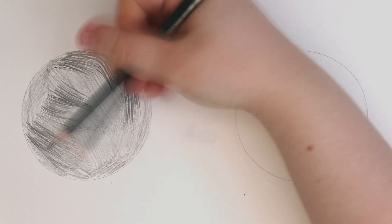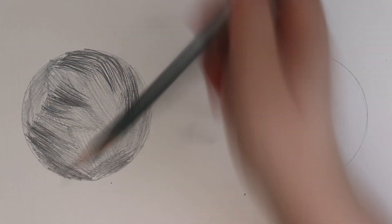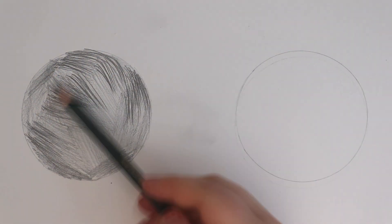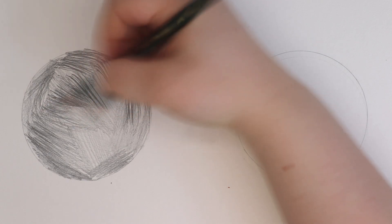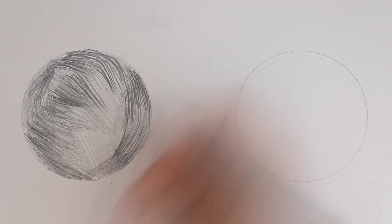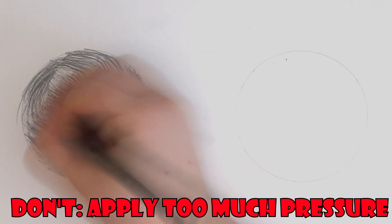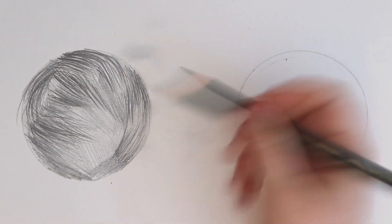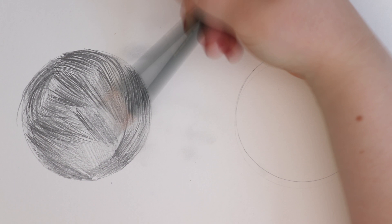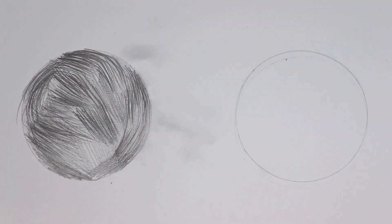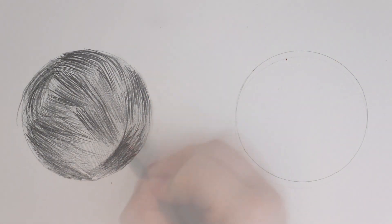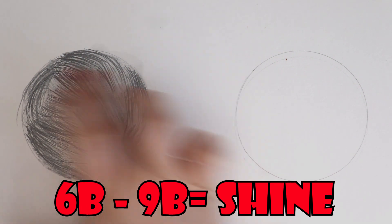I'm going in way too dark with the 6B pencil and applying a very heavy hand, which I see beginners doing. This means I'm not building up layers, not starting with light layers and building to dark values. Straight away I'm applying so much pressure to the paper. With a 6B pencil this is not good because 6B pencils are much darker than H pencils, and the B pencils, particularly 6B to 9B, will give you a lot of shine in your drawing.